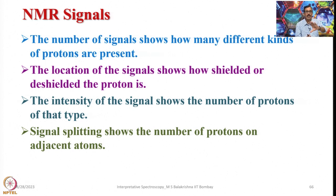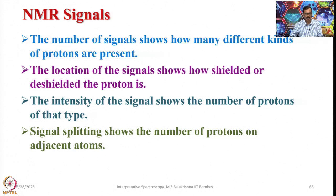With these four vital pieces of information - number of signals, their locations, their intensities, and signal splitting - we should be able to write the molecular structure without any ambiguity. All this information comes from NMR signals.